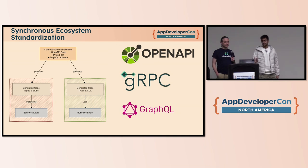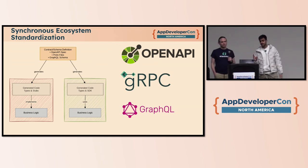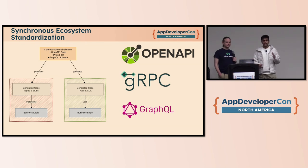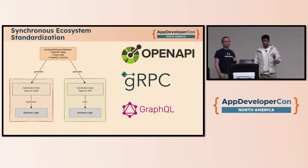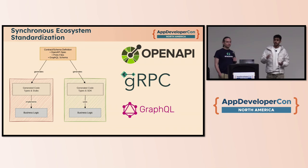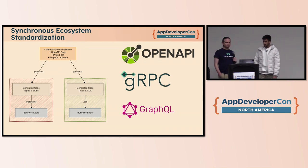With the synchronous ecosystem there is some standardization. You have your contract schema definition — your OpenAPI spec, your proto files, your GraphQL schema. This works on both the client side and server side. On the server side, you generate code and types; your server implements those functions. On the client side, you have the generated library available in almost any language, so you're not bounded to any particular language. Your server could be in one language and your client in another, and you can generate SDKs based on the tooling that OpenAPI, gRPC, and GraphQL have.